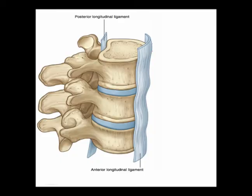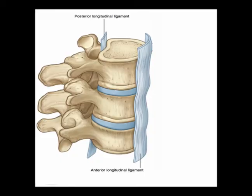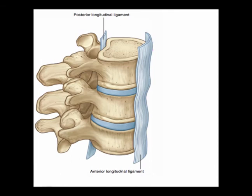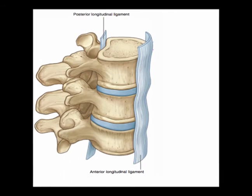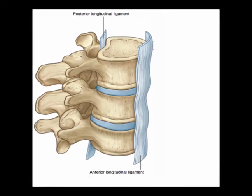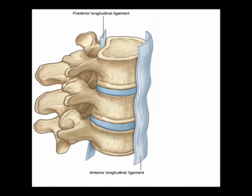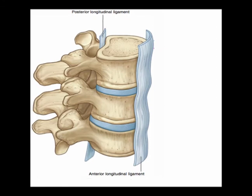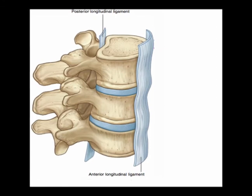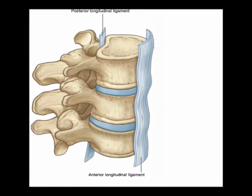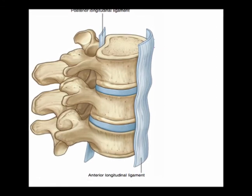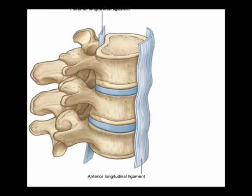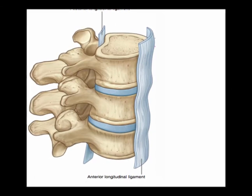The ALL has three layers: the superficial layer, the intermediate layer, and the deep layer. The superficial layer traverses three to four vertebrae, the intermediate layer covers two to three vertebrae, and the deep layer is only between individual vertebrae.